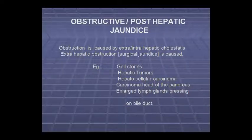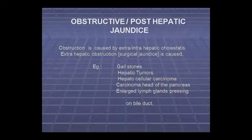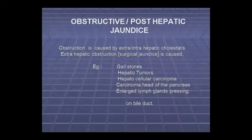In the liver, the conjugation process goes on — this is called hepatic jaundice. And when bile comes out and is obstructed, it is called post-hepatic or obstructive jaundice. Obstruction comes from extra- or intra-hepatic cholestasis. Extra-hepatic obstruction leads to surgical jaundice.